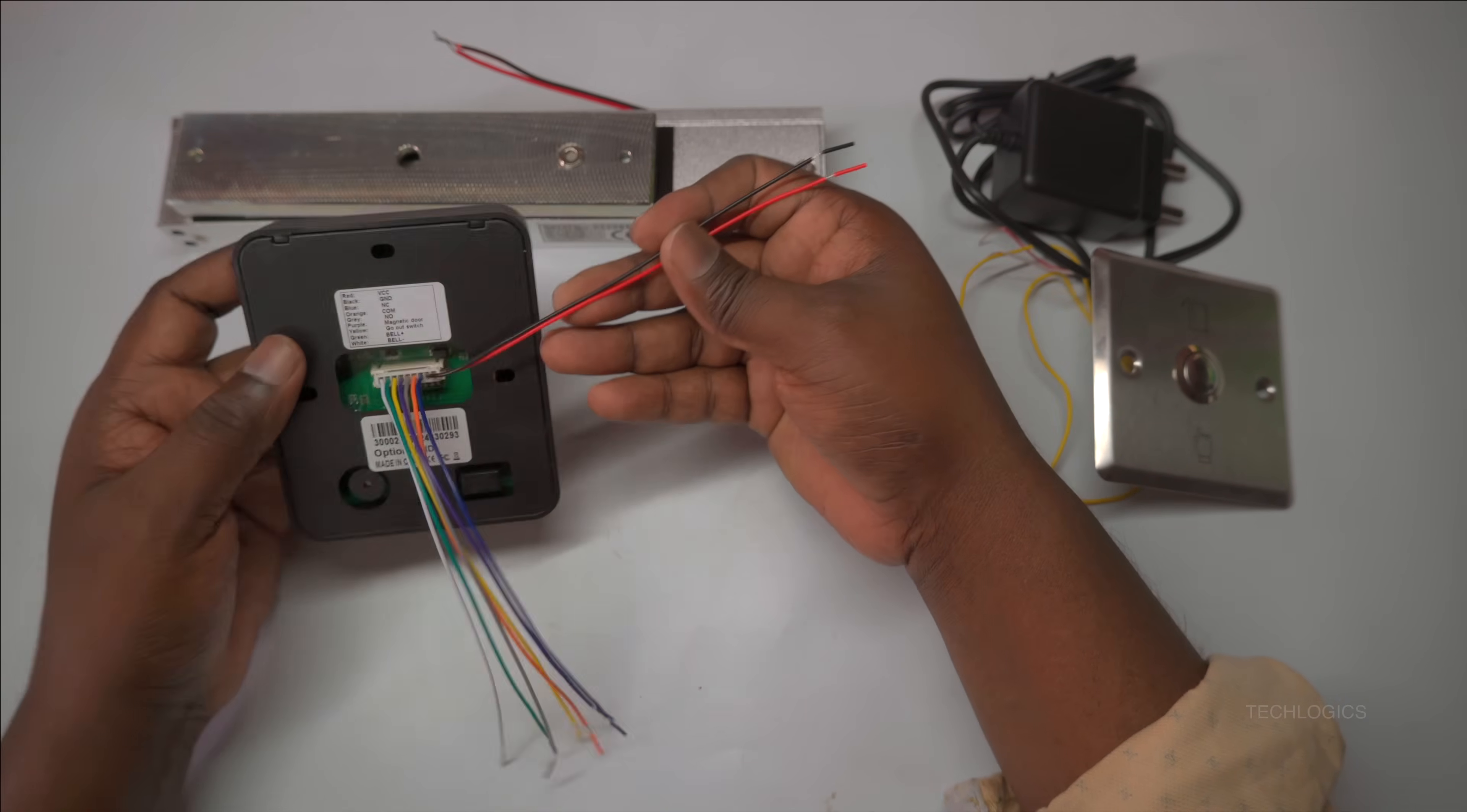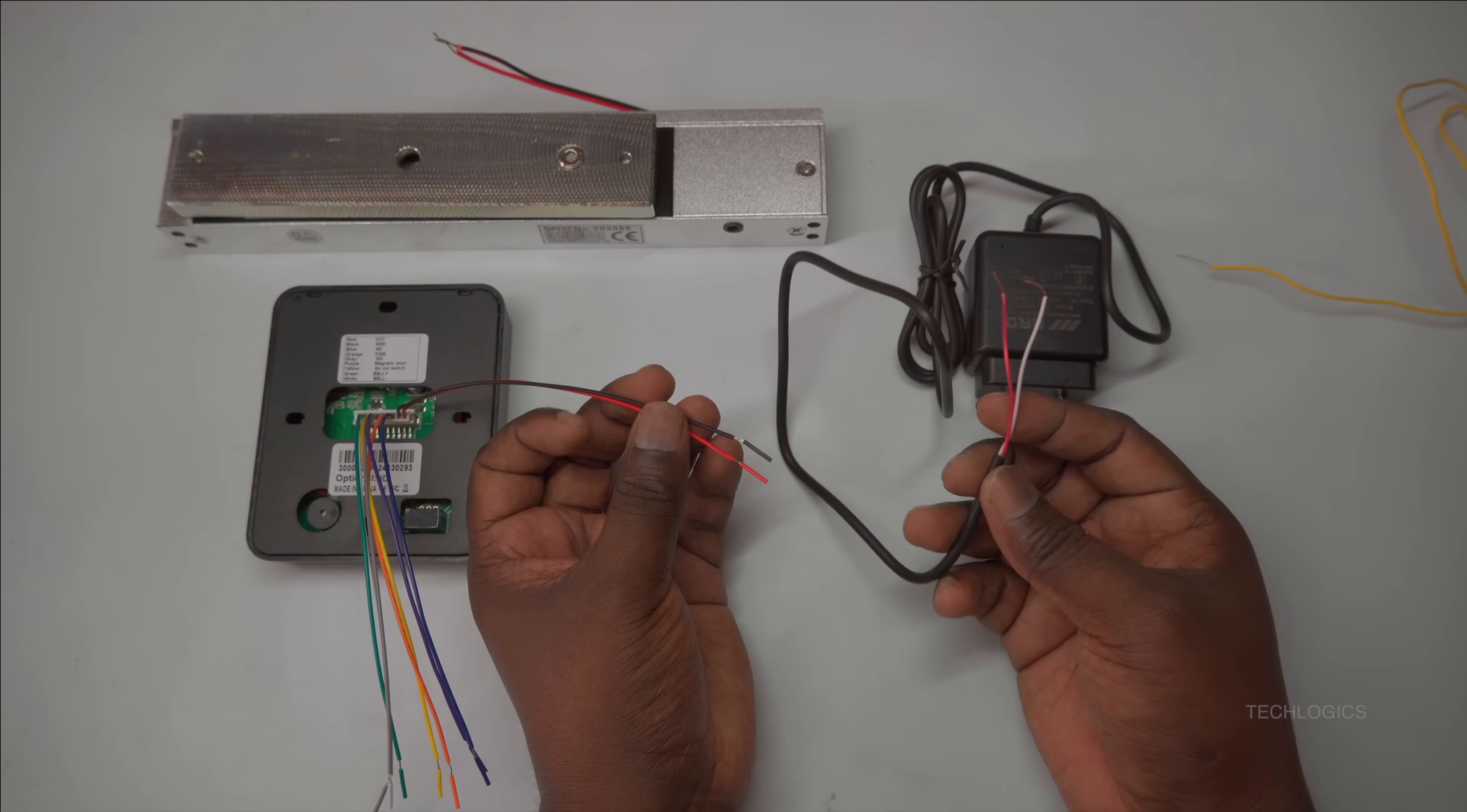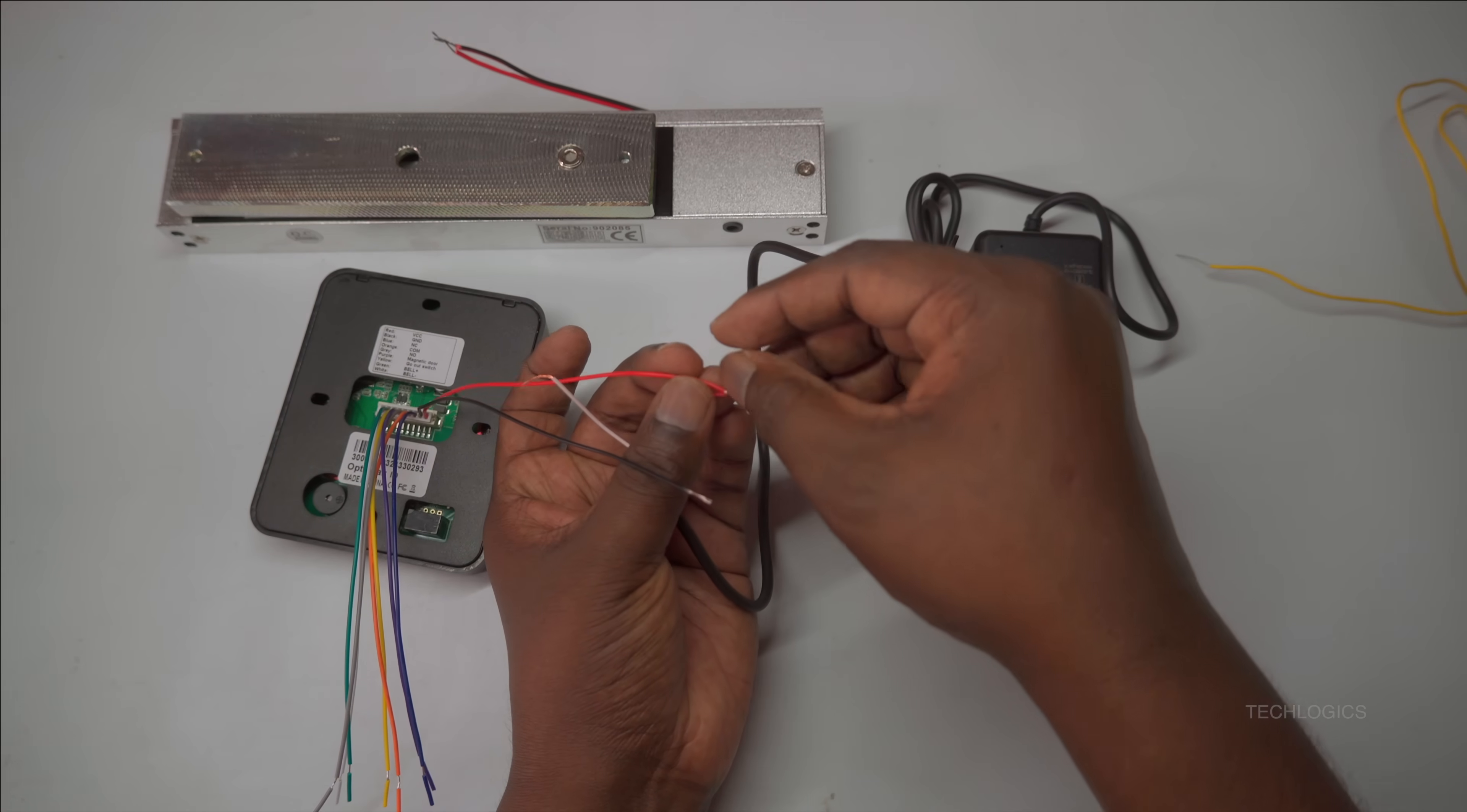Next, connect the negative wire from the power adapter to the GND terminal on the controller. This completes the power supply circuit and allows the controller to be powered correctly. Take care to make secure and firm connections to avoid any loose wiring that could cause operational issues.